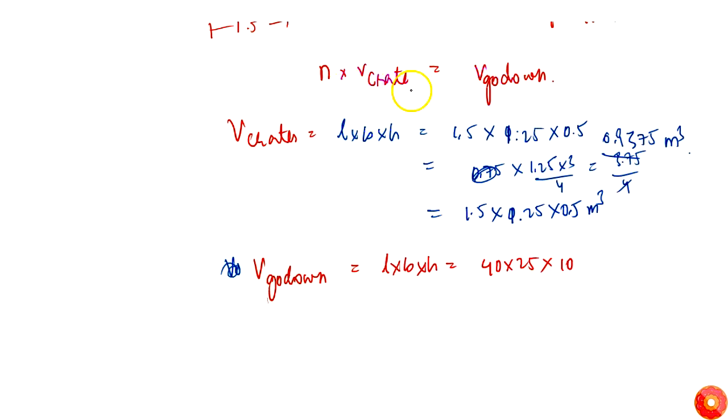We know that n into this thing is this one. Now n is equal to - so from here, n is equal to volume of go-down by volume of crate.